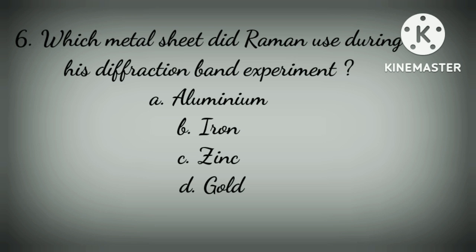Question 6: Which metal sheet did Raman use during his diffraction band experiment? Option A: Aluminium, Option B: Iron, Option C: Zinc, Option D: Gold. The correct option is Option C — Zinc.